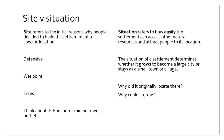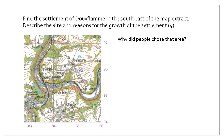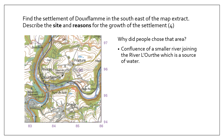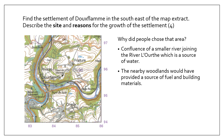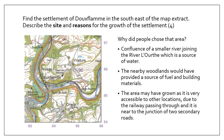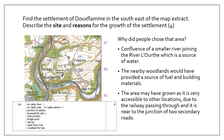Ask yourself: why did people choose this area, and why could it grow? For example, the settlement is at the confluence of a smaller river joining the main river — a source of water. Nearby woodland would have provided fuel and building materials. Those are the reasons for the site. For growth, it may have grown because it's very accessible due to a railway passing through it and its location near the junction of two secondary roads. Checking the mark scheme: valley floor visible from contour lines, accessible location, railway and secondary roads at a junction, water from the river, and woodland for fuel. All four marks achieved.